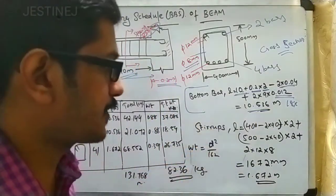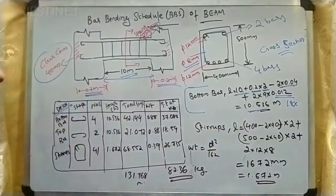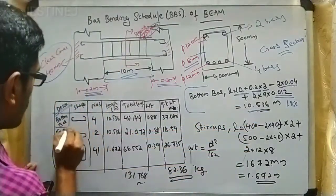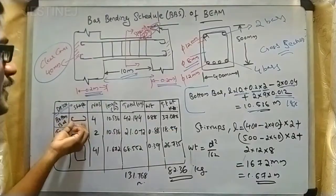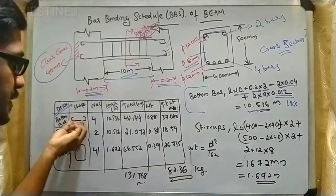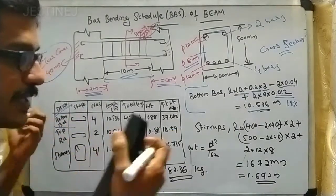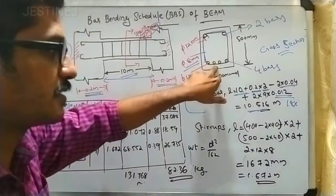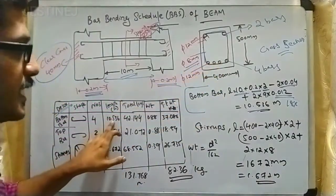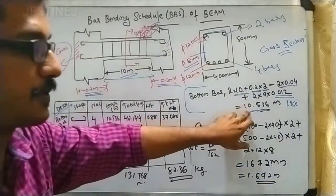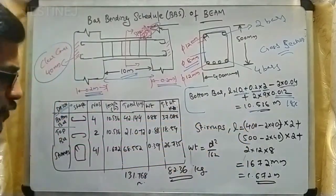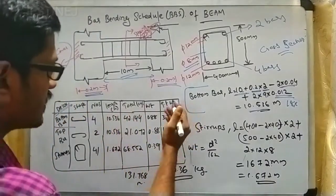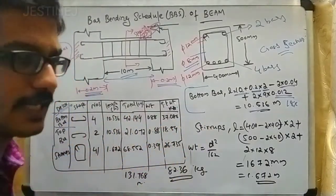You can now write down the bar schedule entries for the bottom bar. The shape is a straight bar with two hooks on each side. From the cross-section, the number of bars is four. The total length is the value just obtained, 10.536 meters. Multiplying four bars by 10.536 gives 42.144 meters total.